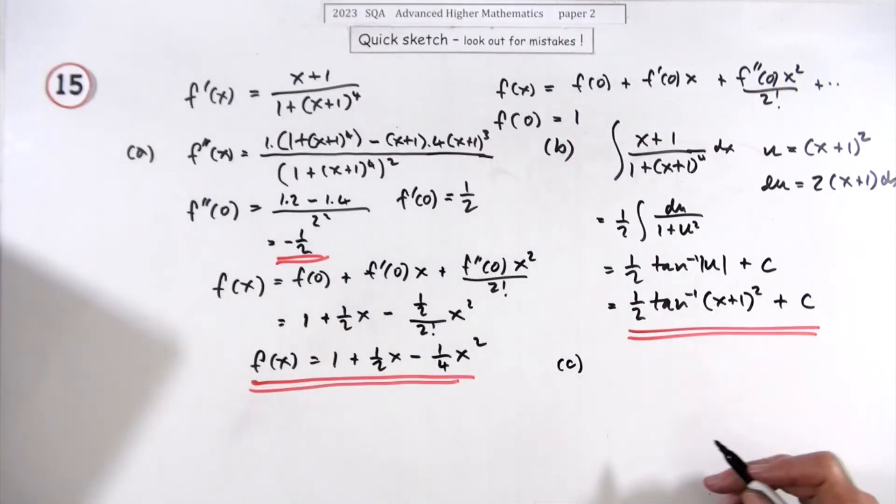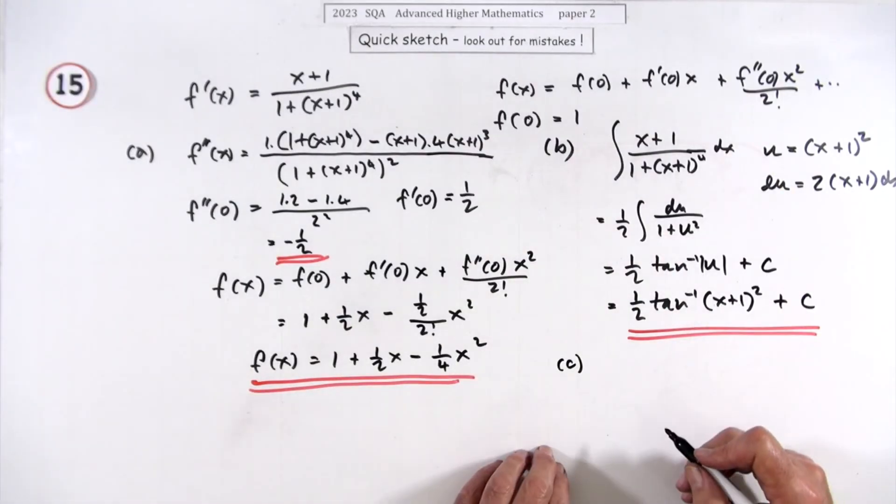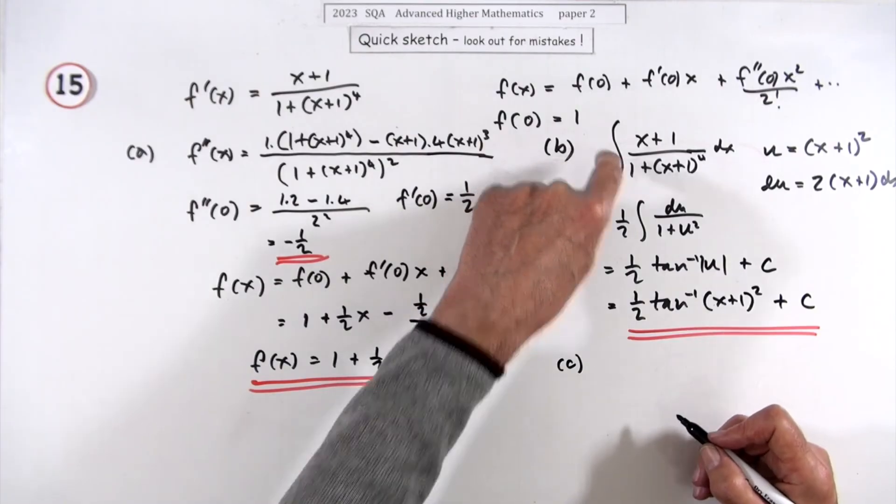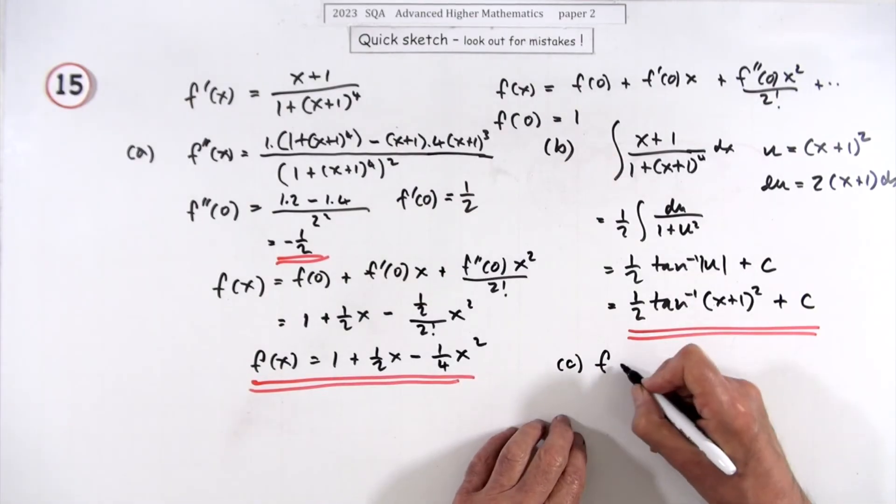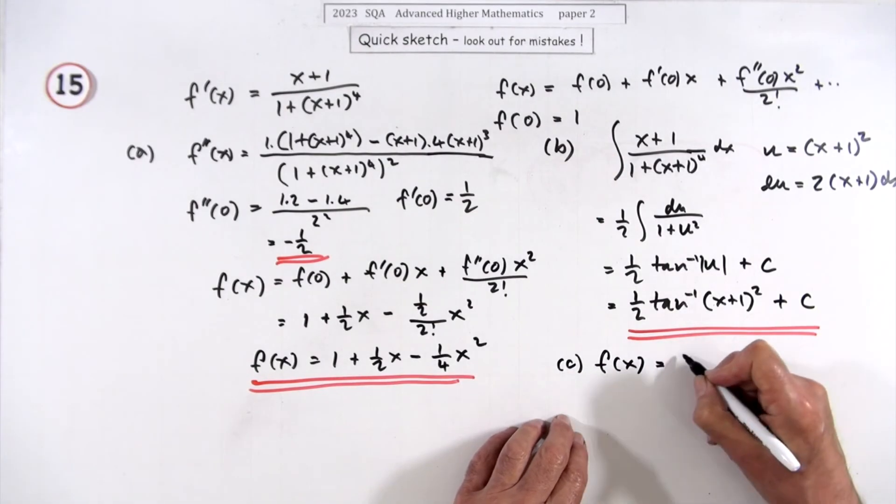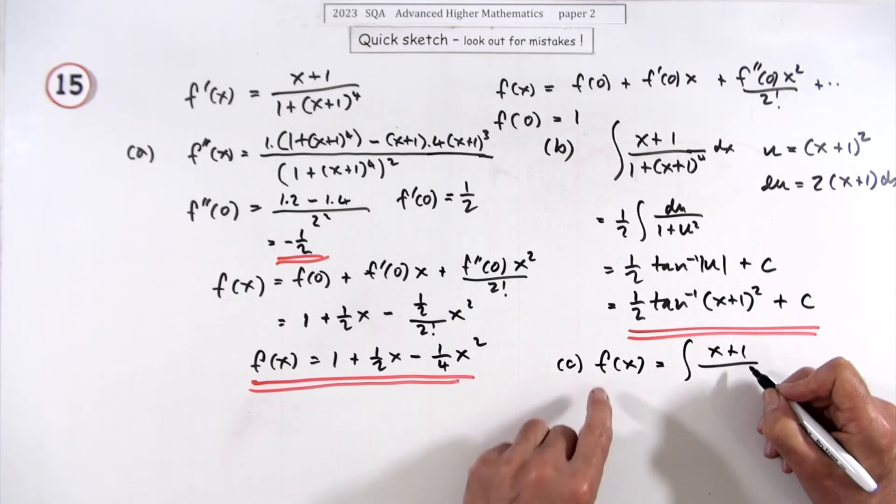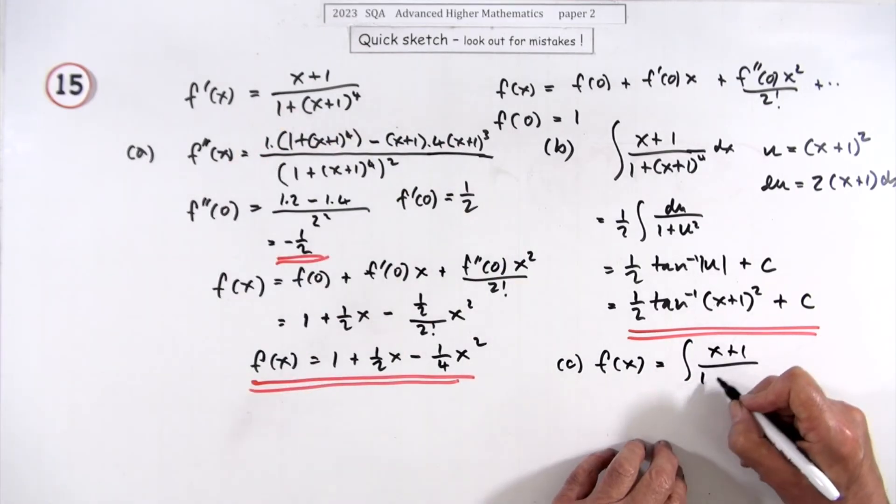It said determine the expression for f(x). Well that is f(x) because f(x) would have been that integral.